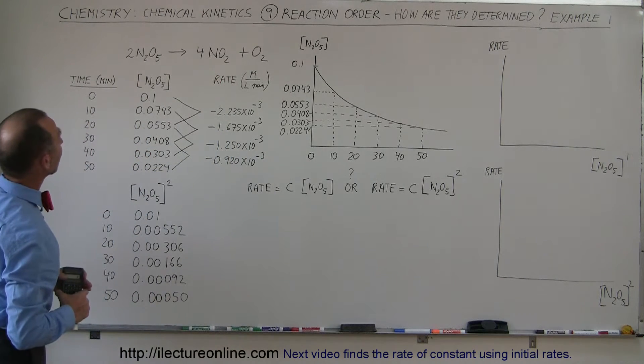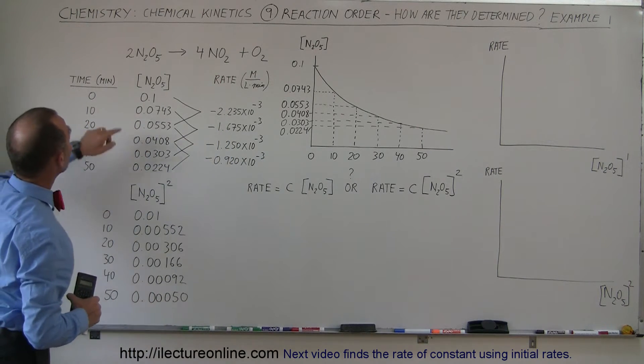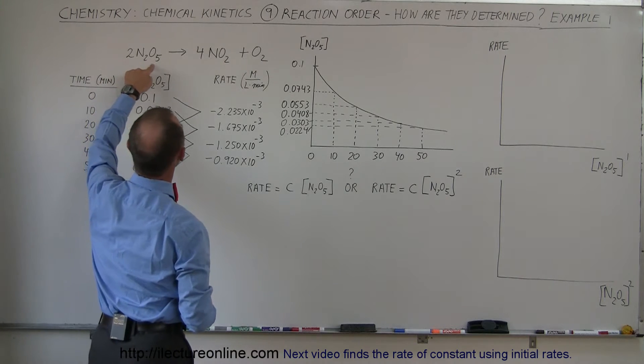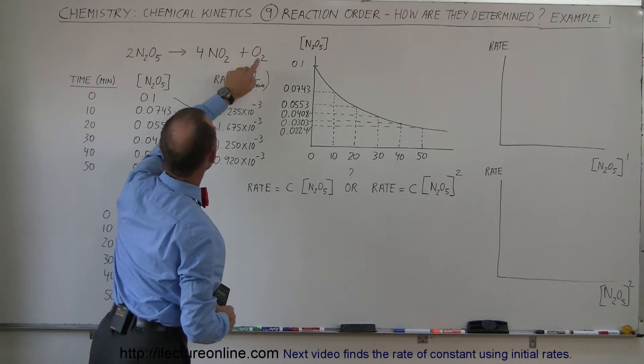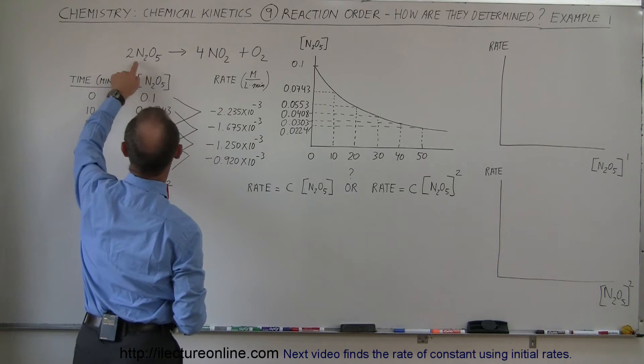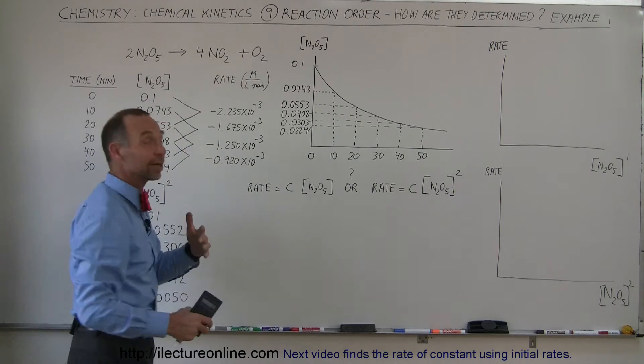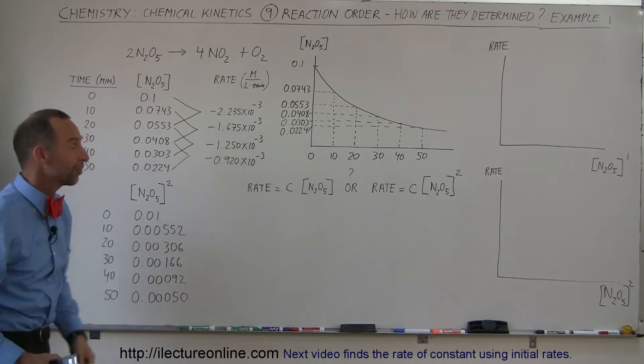Let's check if that's balanced. We have 10 oxygens here — 8 plus 2, that's 10. We have 4 nitrogens, 4 nitrogens. The equation is balanced.